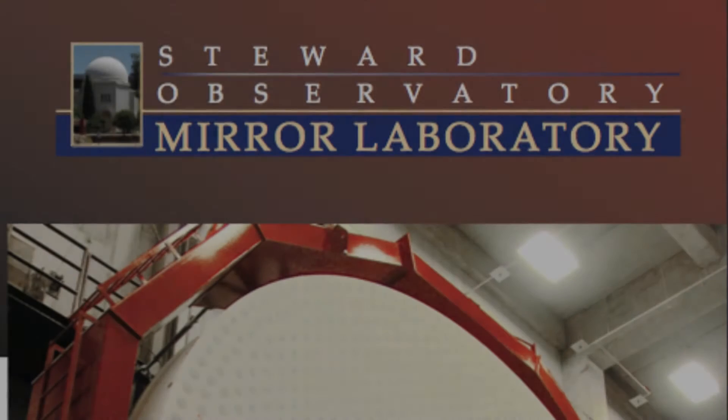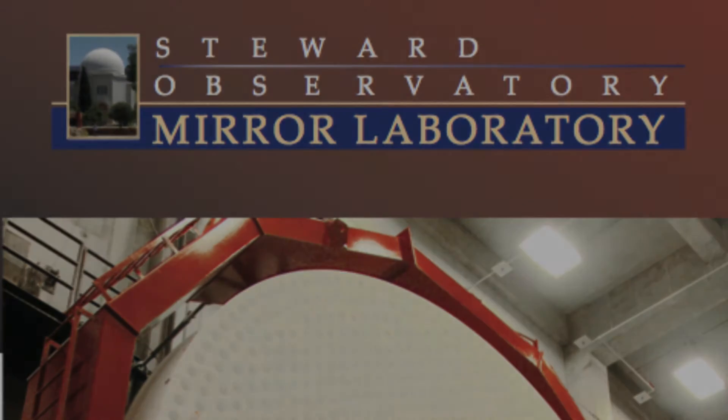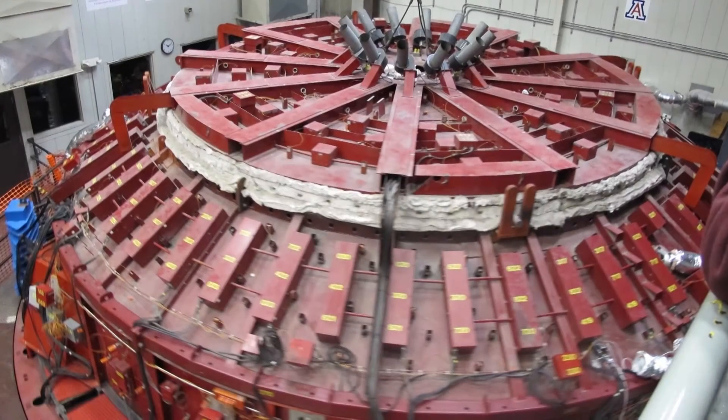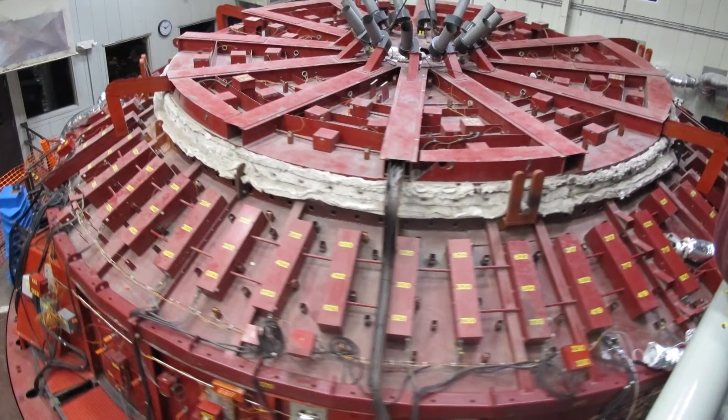In the early 1980s, Stewart Observatory Mirror Lab at the University of Arizona began using the technique of spin casting. This involves creating the mirror blank in nearly the correct parabolic shape in a spin caster that is a combination of oven and mirror mold.